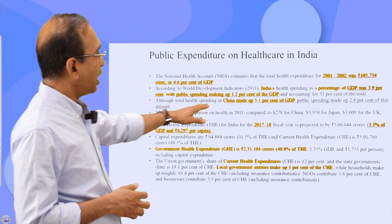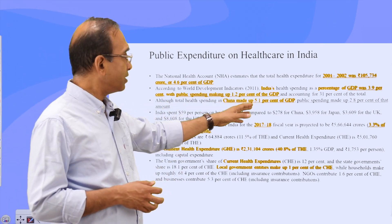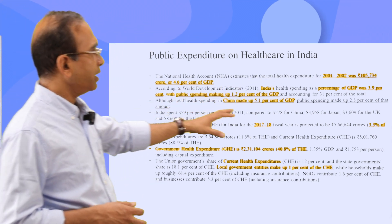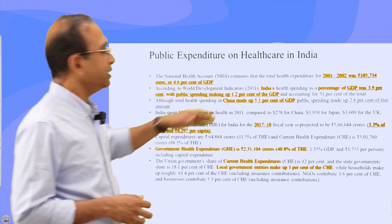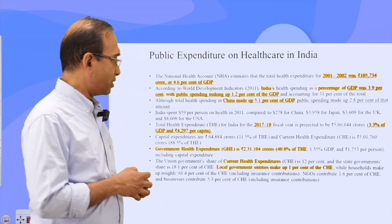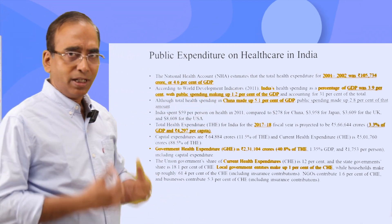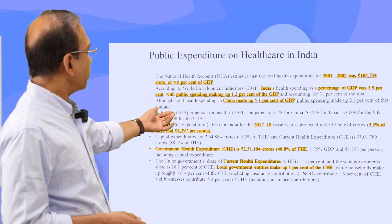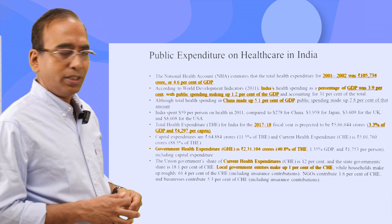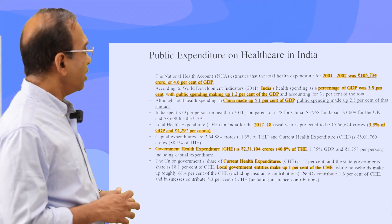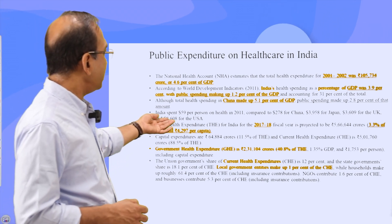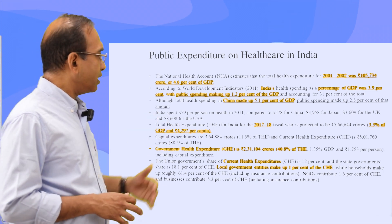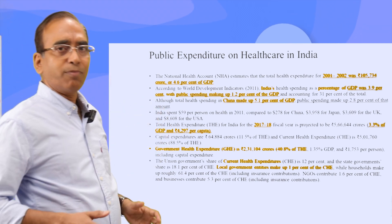Total health spending in China was 5.1%, with China's public spending at 2.8%, whereas India's public spending is only 1.2% — India is actually spending much less on health. Around $59 per person in 2011 was India's spending on health, whereas it was $8,608 in the USA.